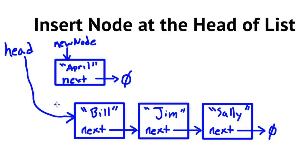In this case the traversal doesn't go far. We look at the first node, which has the name Bill, and our new node has the name April. We see that April should go before Bill, so this node belongs at the very head of our list. We need to take new node's next and have it point to Bill, and head should point to new node.